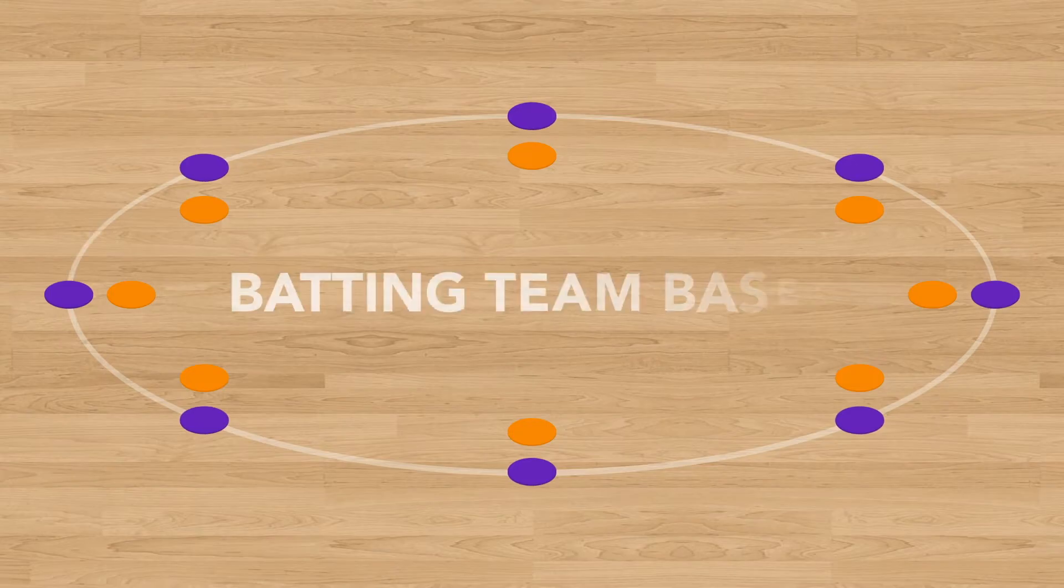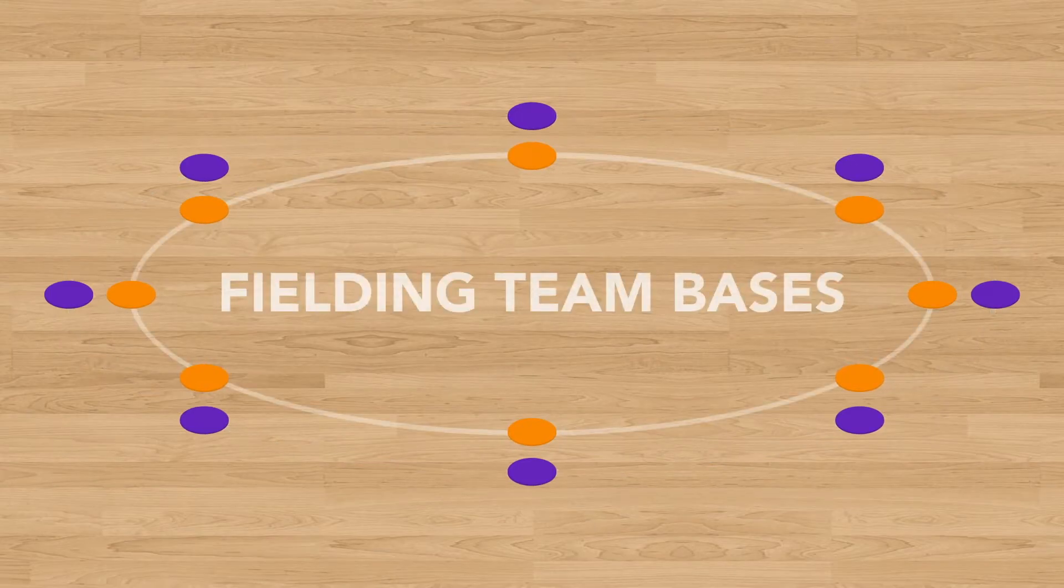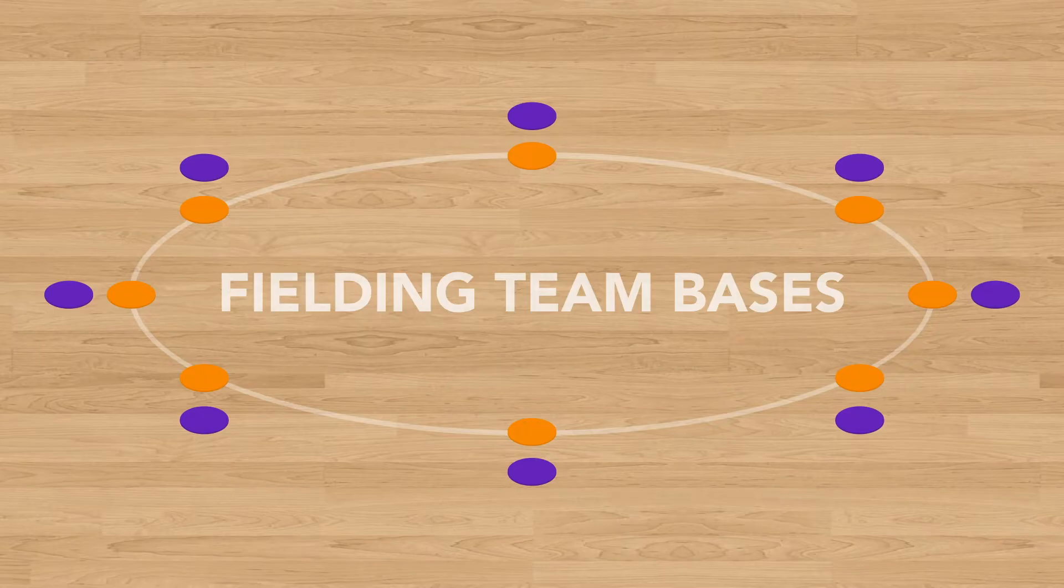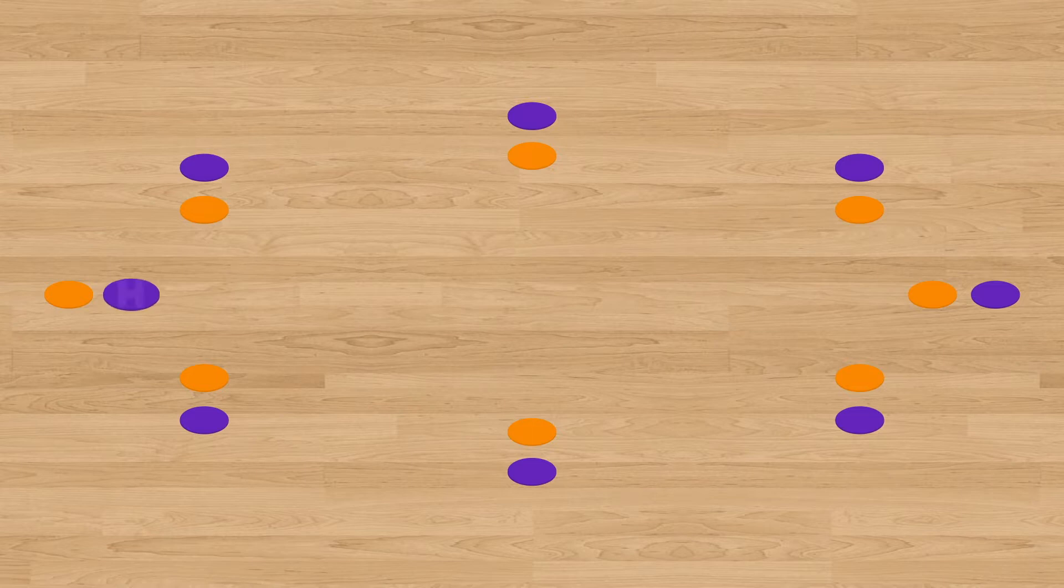The outside bases will be the batting team's bases, and the inside bases will be the fielding team's bases. There is one exception here, as two bases will be inversed. The inside base, which is still the batting team's base, becomes home plate, and the outside base becomes the catcher's base.